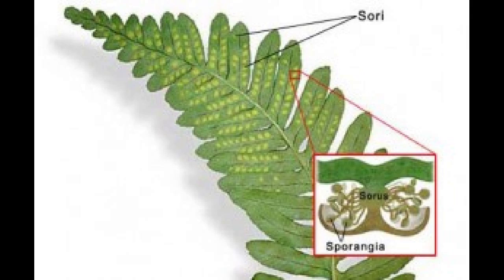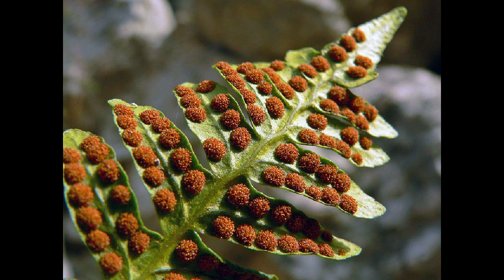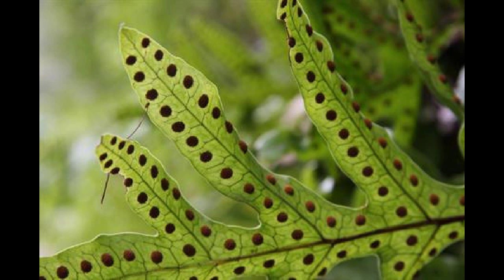On the bottoms of the leaves of the fern's sporophyte are small capsules called sori, which protect the sporangia containing the sporocytes inside.